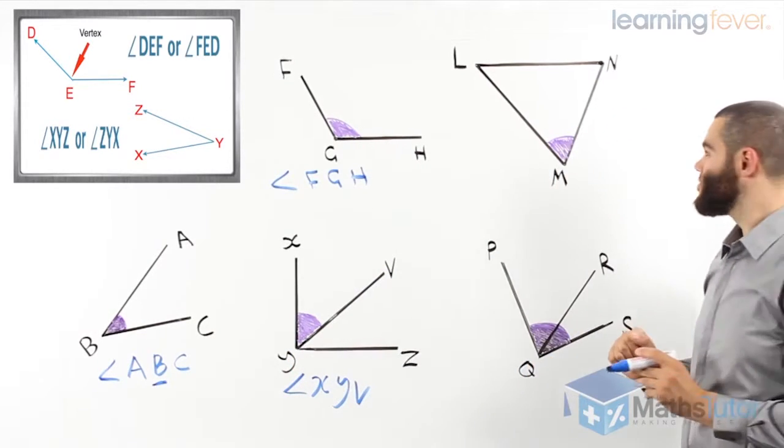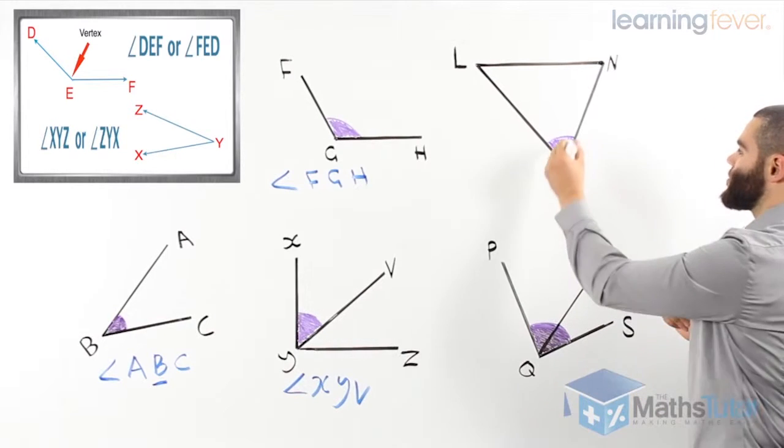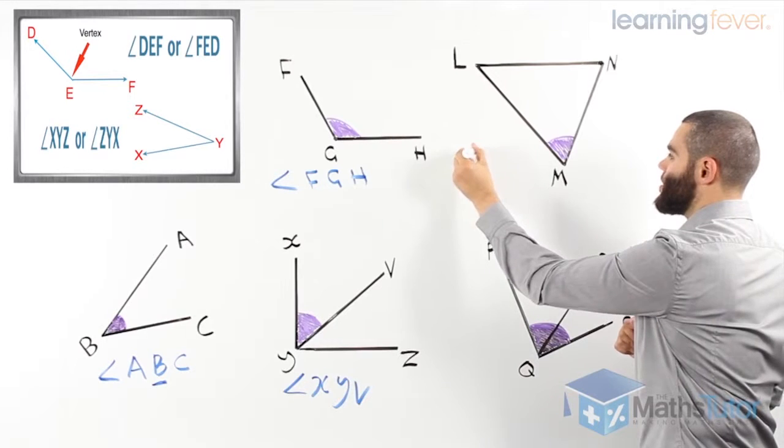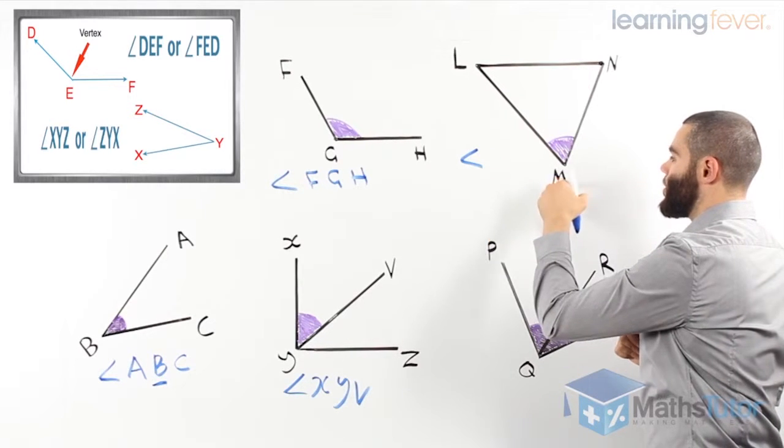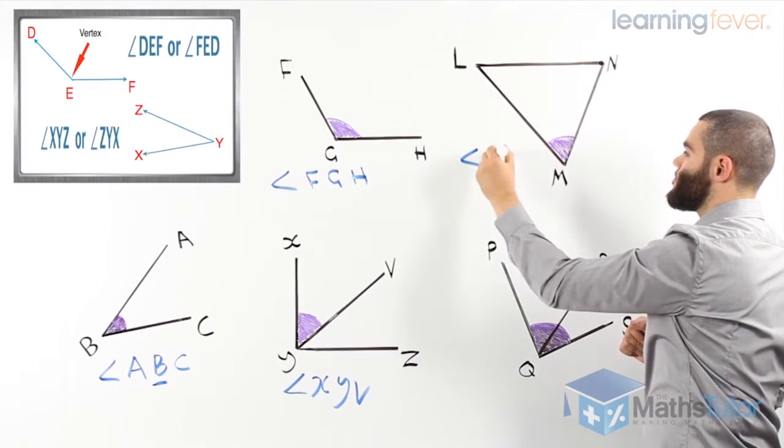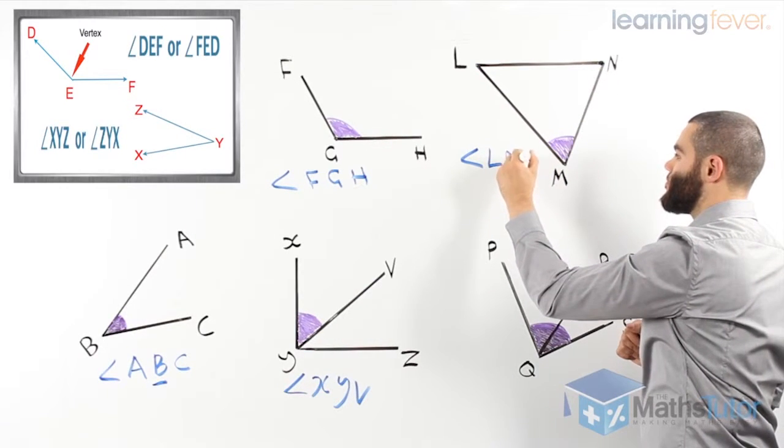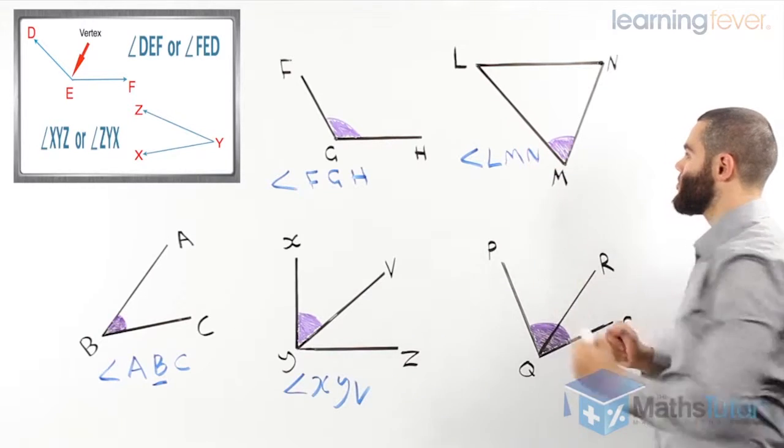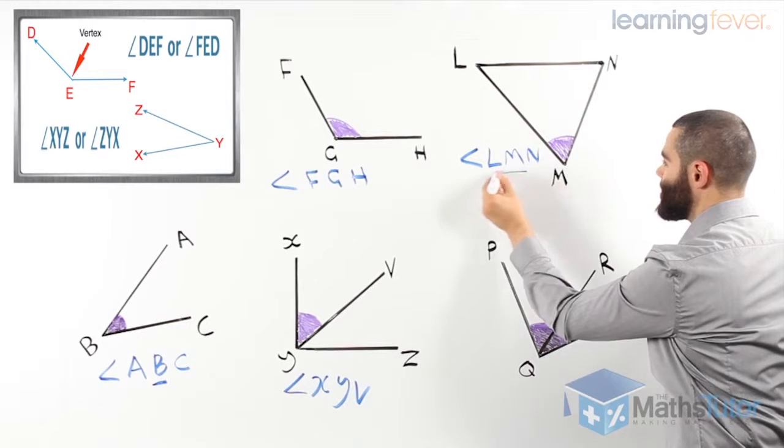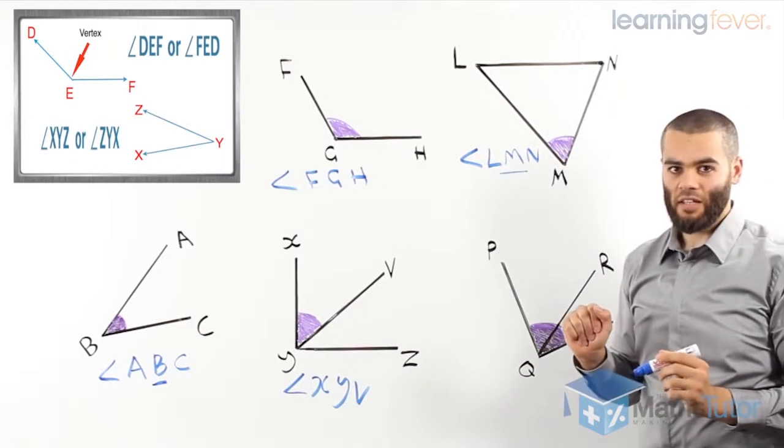This one here we have a triangle. And the angle marked is on this section here. We would like to know how to name it. So, we can say, we know M is the vertex. Angle LMN. The vertex, once again, is in the middle.